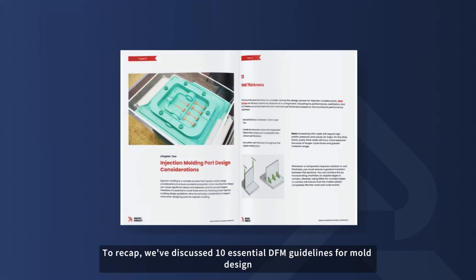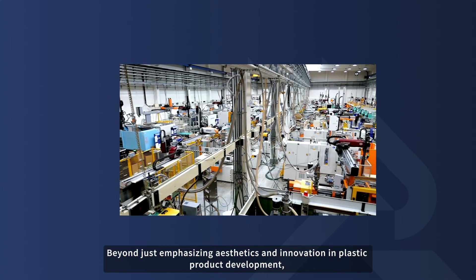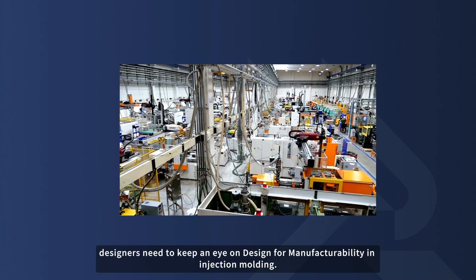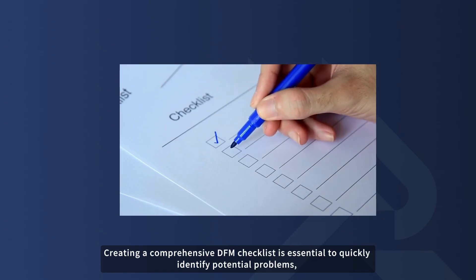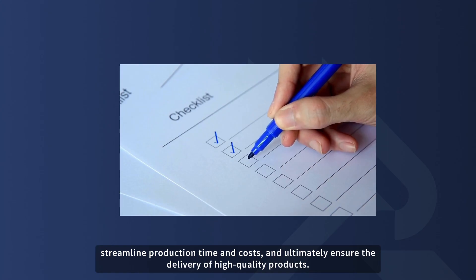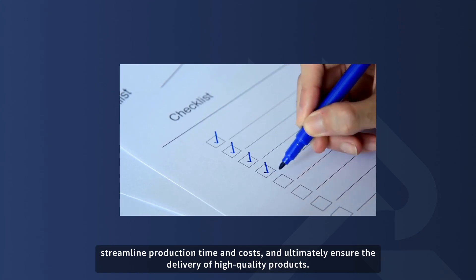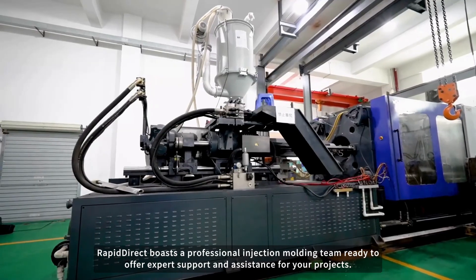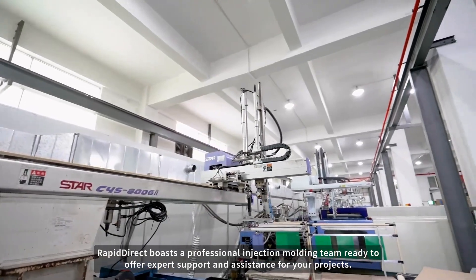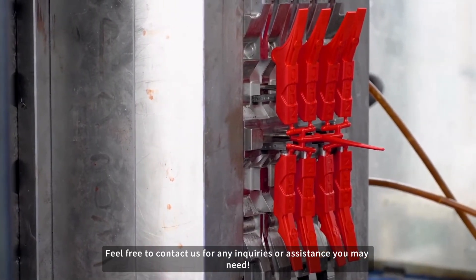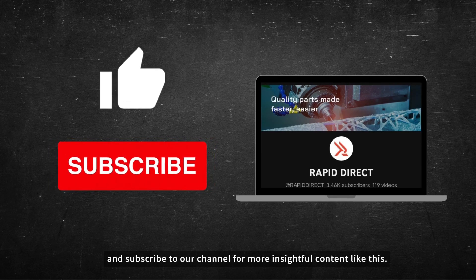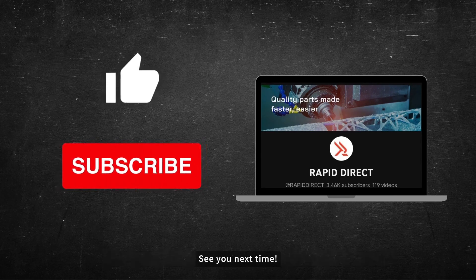To recap, we've discussed 10 essential DFM guidelines for mold design to facilitate seamless and efficient progress in your injection molding projects. Beyond aesthetics and innovation, designers need to keep an eye on design for manufacturability. Creating a comprehensive DFM checklist is essential to quickly identify potential problems, streamline production time and costs, and ultimately ensure the delivery of high-quality products. RapidDirect boasts a professional injection molding team ready to offer expert support for your projects. Feel free to contact us for any inquiries. If you found the video helpful, don't forget to like and subscribe for more insightful content. See you next time.